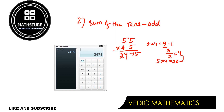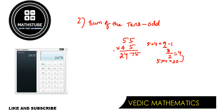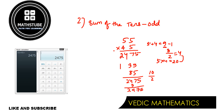One more example for case two. Take 35 and 85. Here 8 plus 3 is 11, which is odd, so last two digits are 75. Multiply 8 by 3: that's 24. Sum is 11, subtract 1 to get 10, divide by 2 to get 5. Add: 24 plus 5 is 29. Answer is 2975. Verified: 35 into 85 is 2975. Correct!